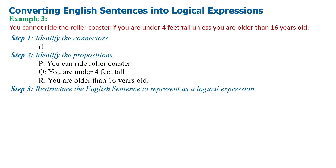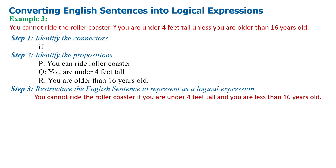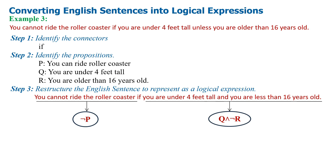Step 3 — restructure the English sentence to represent as a logical expression. 'You cannot ride the roller coaster' is represented as negation P. 'You are under 4 feet tall and you are not older than 16 years old' is represented as Q conjunction negation R. These combine using the conditional operator: negation P if Q conjunction negation R, rewritten as Q conjunction negation R implies negation P.